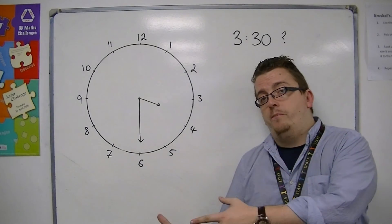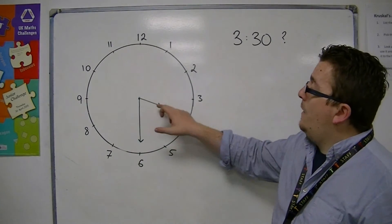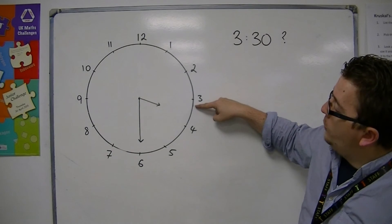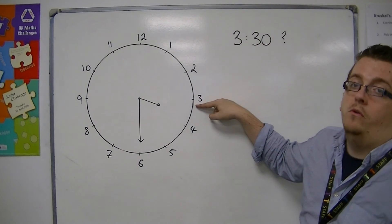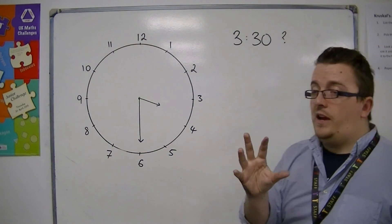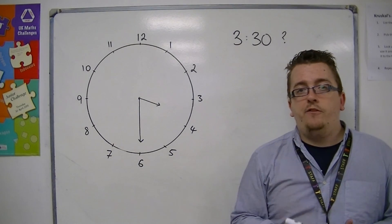OK, so if it was a quarter past 3, then the hour hand should be a quarter of the way between 3 and 4. OK, so that's how they're going to trip you up if they're going to try.